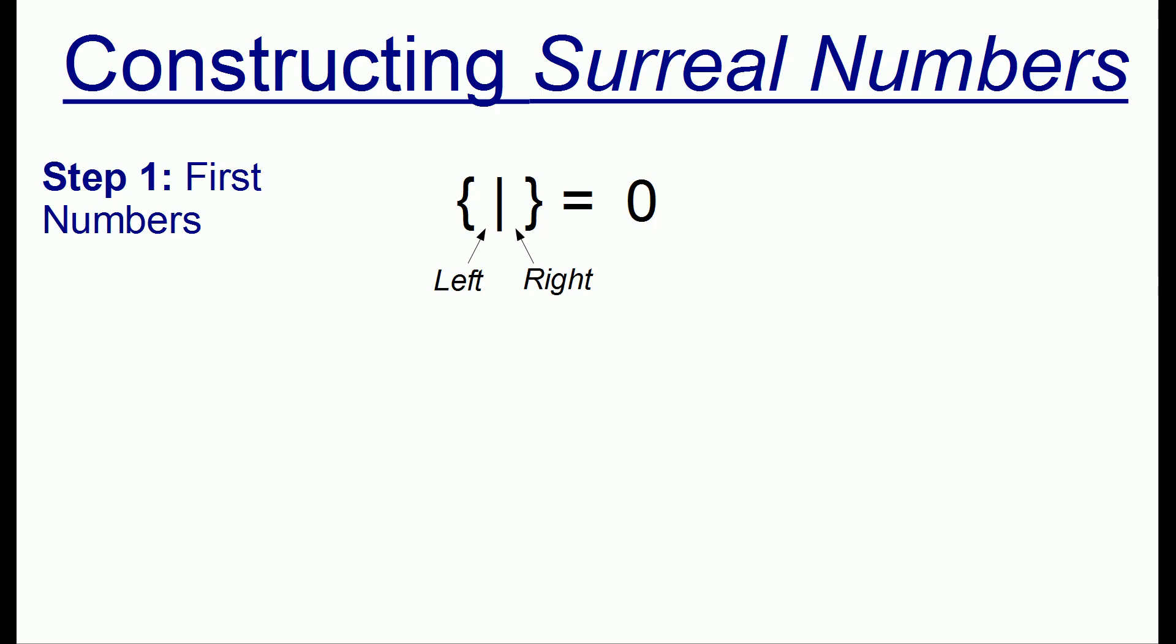The empty set we're going to define as the number 0. But now, these sets we're going to use have a left and a right side. So now we can build up two more numbers once we have the number 0 by putting a 0 on the left side or putting a 0 on the right side of the divider. We can define the first number as 1 and we're going to define the other number as negative 1.